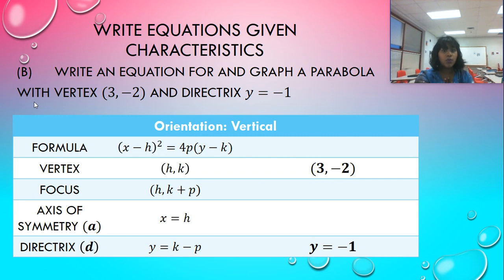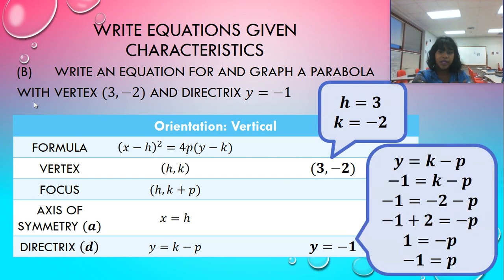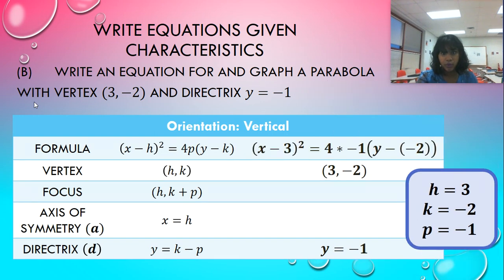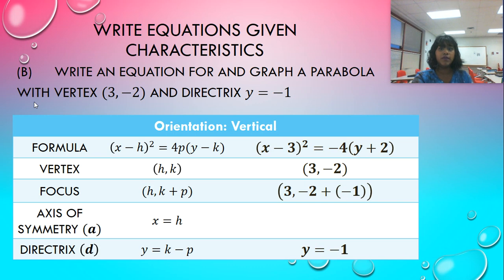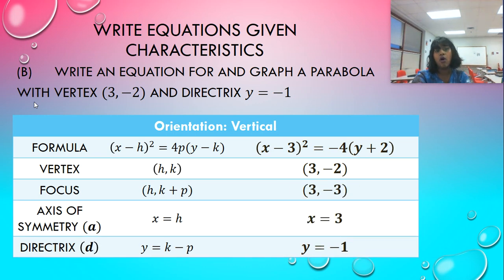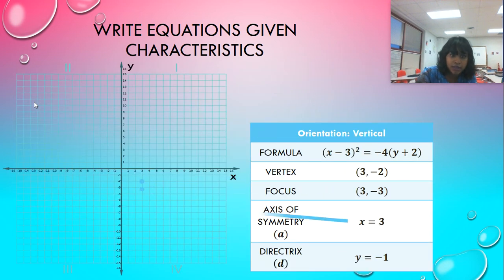So that means we know some values. Can we solve for P? In fact, we can use the directrix. Since directrix is equal to K minus P, and I know my K, I can solve for it. So I go ahead and plug that in. Plug in what we know. We know negative one. Plug in what we know. We know negative two, and we solve for our P value. Our P value is negative, so this means since we're vertical, we're probably facing down. We'll test that when we see what direction our focus is and what direction our directrix is in. So we plug in what we know. We keep on solving, keep on solving until we have all of our characteristics accounted for.